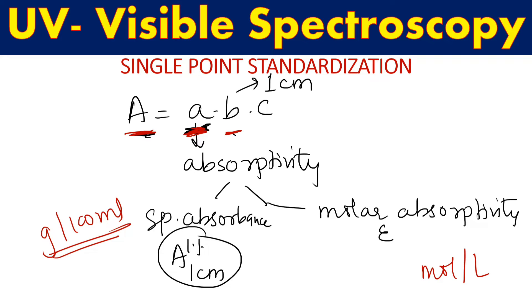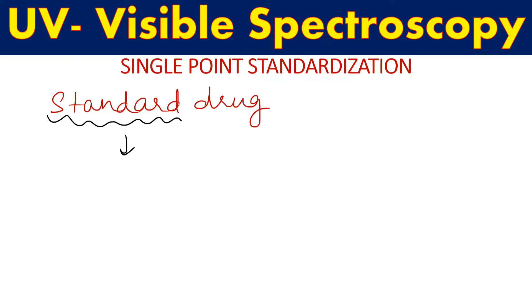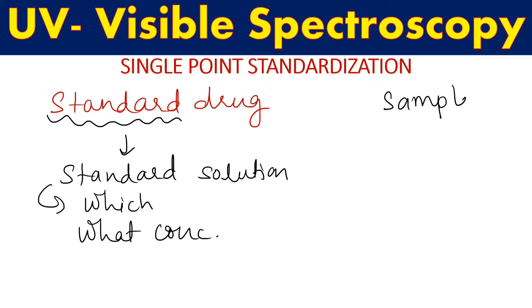It may happen that we do not have the absorptivity value of a particular drug. In that case, we cannot use the Beer-Lambert equation directly because we don't have the absorptivity value. So we must have the standard drug with us — the API availability should be there. Using the standard drug we prepare a standard solution, which means we know which substance it is and what concentration is present.